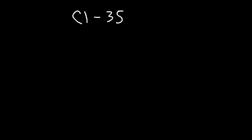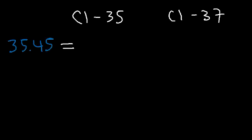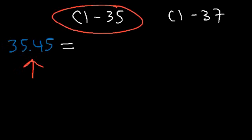Sometimes you need to work backwards and calculate the relative percent abundance of each isotope. Consider chlorine, which has two main isotopes: chlorine-35 and chlorine-37. The average atomic mass from the periodic table is 35.45. Since the average is closer to 35 than to 37, that tells us chlorine-35 is more abundant in nature than chlorine-37.